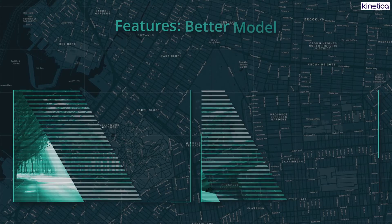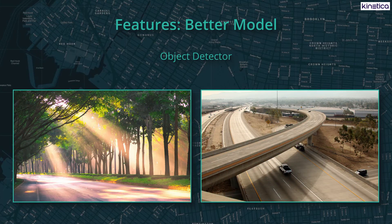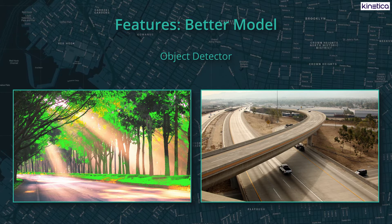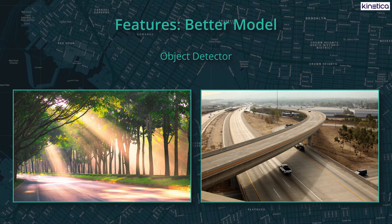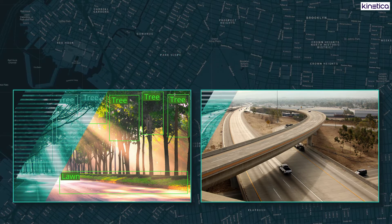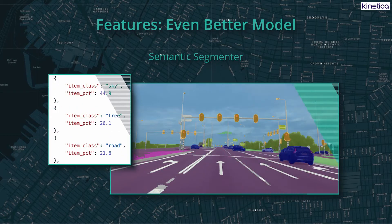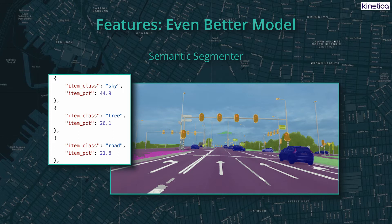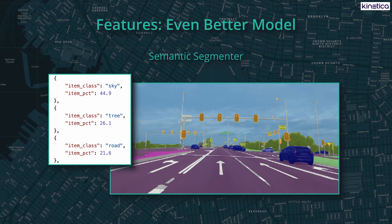To capture these features, we started with a baseline model — just count green pixels. That is better than nothing, but we took it further and started looking for objects; here you can see we detected some trees and some lawns. Finally, we worked on a semantic segmenter that actually chops up the image into exact pixels for what is what: roads, trees, sky, signs, walls, etc.